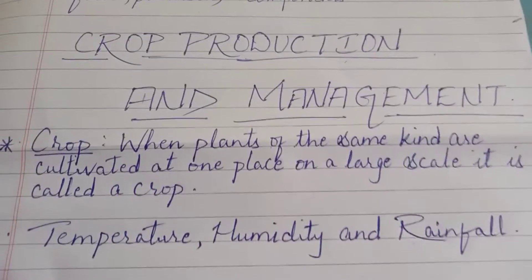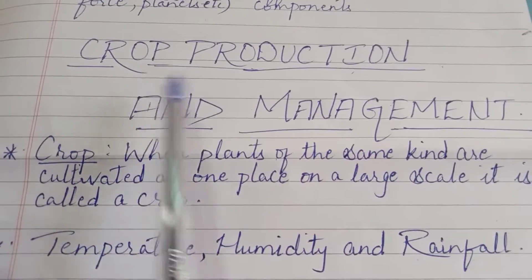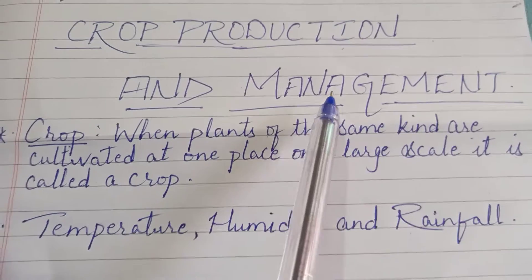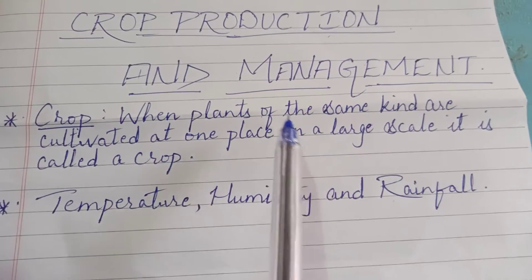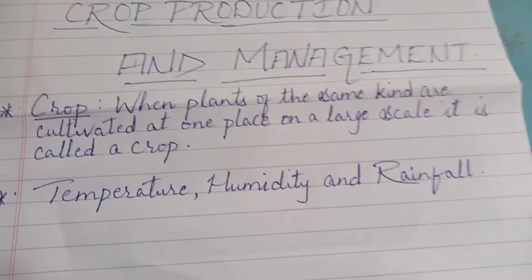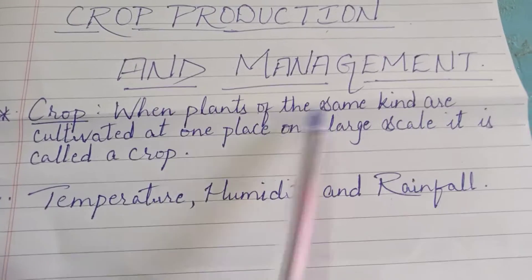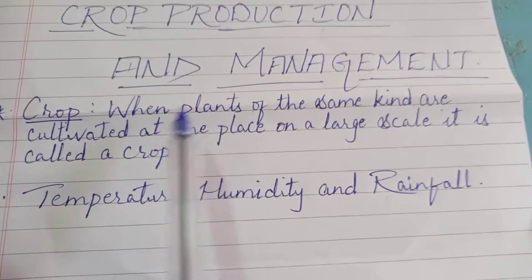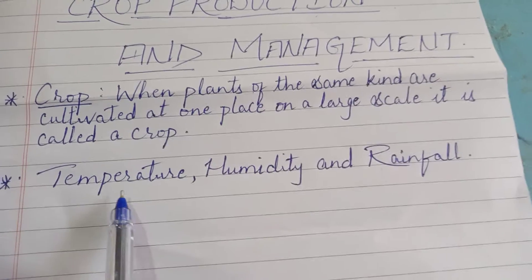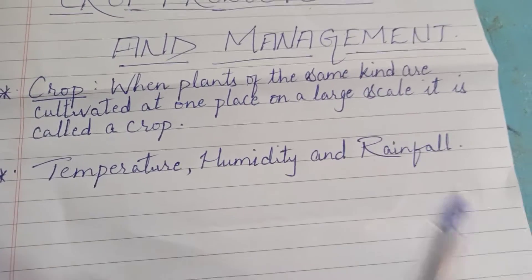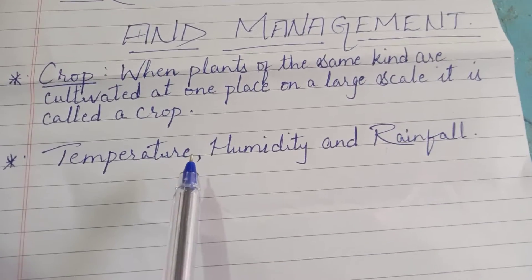Assalamu alaikum students. In our previous video we have already discussed and got introduced to the chapter Crop Production and Management. We saw the definition of crop — if the same kind of plant is grown on a large area, that way of producing the plant is called a crop. We also discussed temperature, humidity, and rainfall as the three climatic conditions that decide the type of crop grown in an area.